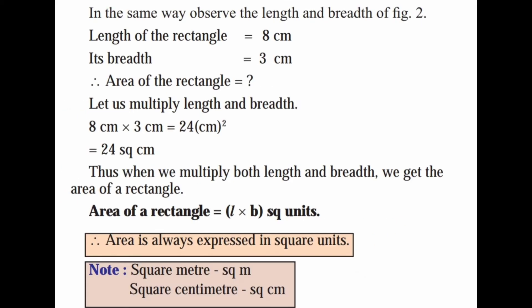The area of the second figure is 8 into 3, which is also 24. So the formula for area of a rectangle is equal to L into B, in square units. The area of a rectangle is easy to find out.